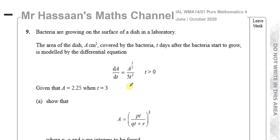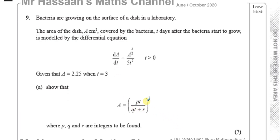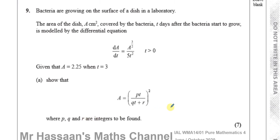This is a question about differential equations. It says bacteria are growing on the surface of a dish in a laboratory. The area of the dish, A centimetres squared, covered by the bacteria, t days after the bacteria start to grow, is modelled by the differential equation dA/dt equals A to the power of 3/2 over 5t squared, where t is greater than 0. Given that A equals 2.25 when t equals 3, show that A equals (pt / (qt + r)) all squared, where p, q, and r are integers to be found.